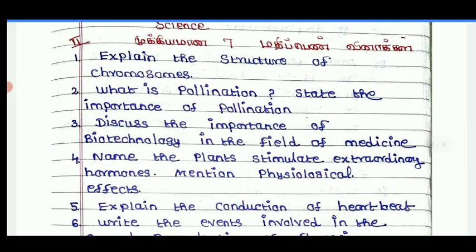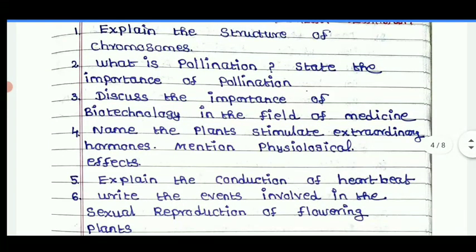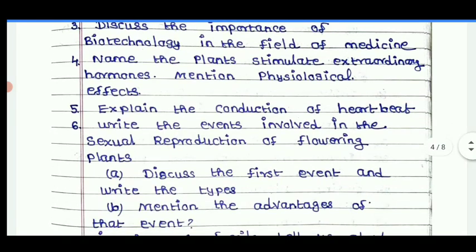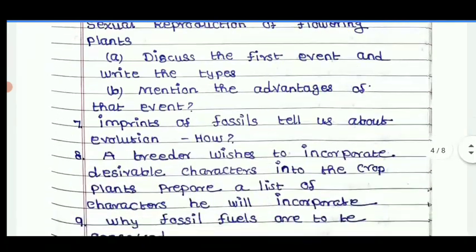Explain the structure of Chromosome. What is pollination? State the importance of pollination. Discuss the importance of biotechnology in the field of medicine. Name the plants that stimulate extraordinary hormones and mention the physiological effects. Explain the conduction of heartbeat. Write the events involved in sexual reproduction in flowering plants.